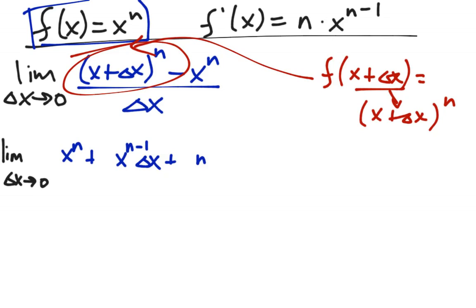X to the n minus 2 delta x squared. This process continues until you reach the n. So the last two terms are x to the first delta x to the n minus 1. And then the very last term, there is no x and it's just delta x to the n. Don't forget, you do have the minus x to the n at the very end.